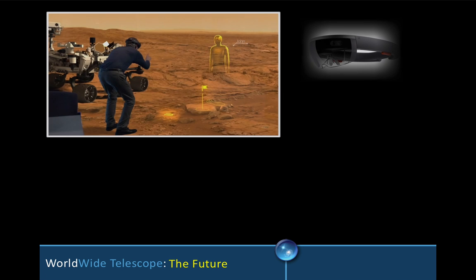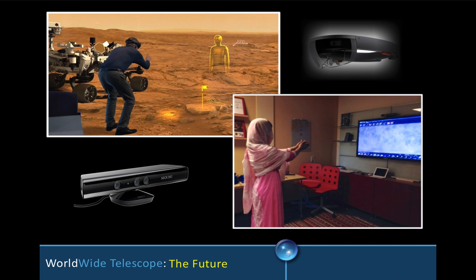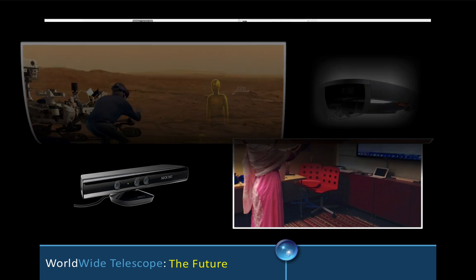In the future, new interfaces will offer new options to explore three-dimensional data sets inside of Worldwide Telescope. Shown here are illustrations of those technologies—the HoloLens and the Kinect. The Kinect already works with Worldwide Telescope, and gestures can control your path through the universe.